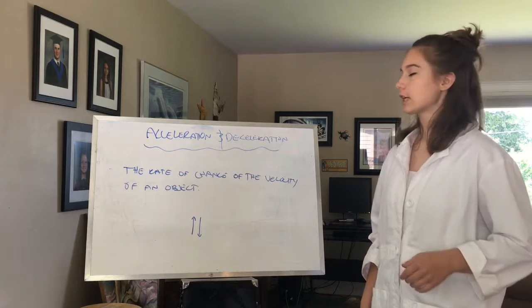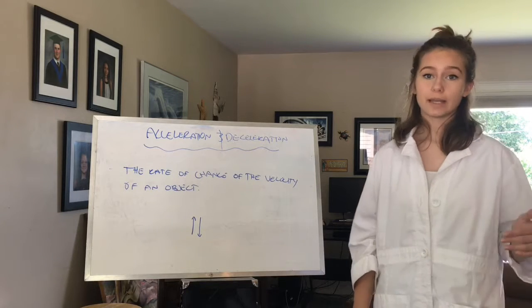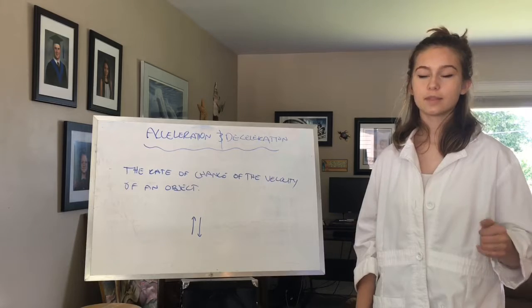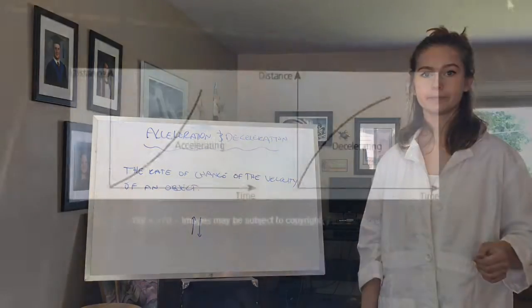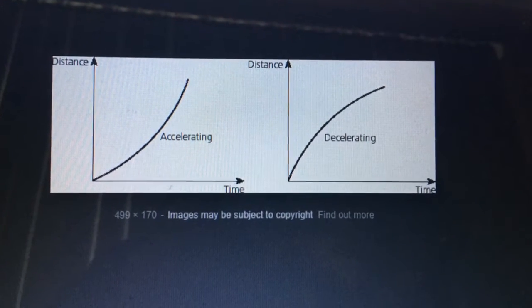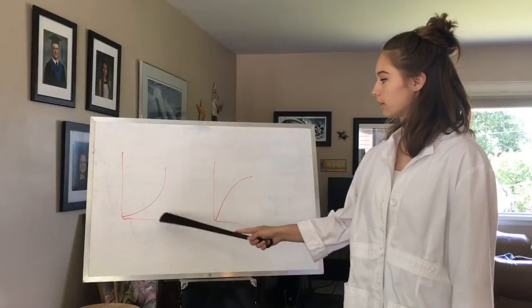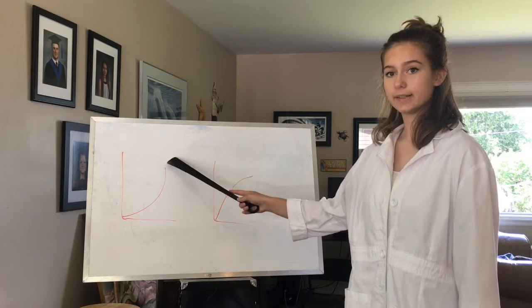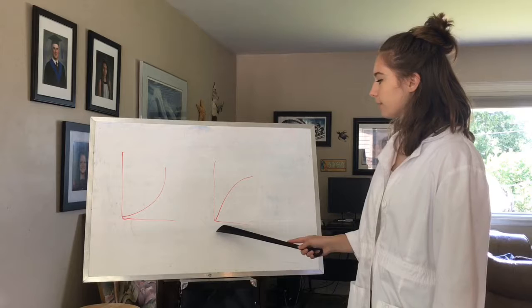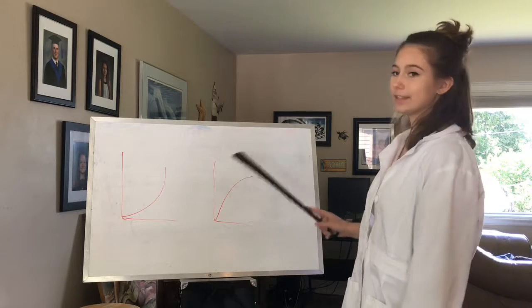And if an object is decelerating, it's slowing down. Let's take a look at a graph that shows acceleration versus deceleration. This graph shows acceleration because you can see the speed is increasing, and this one shows deceleration because you can see the speed is decreasing.